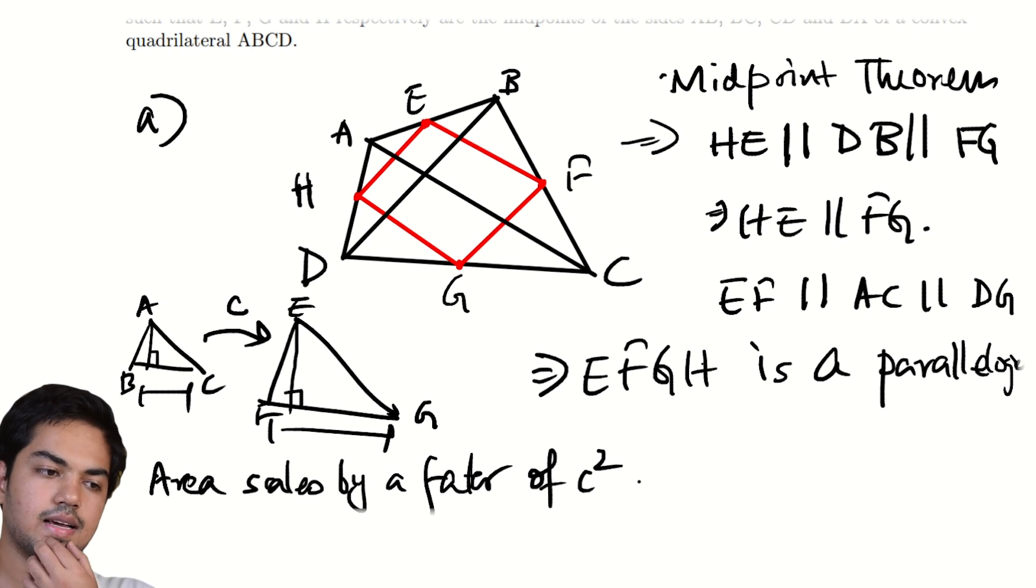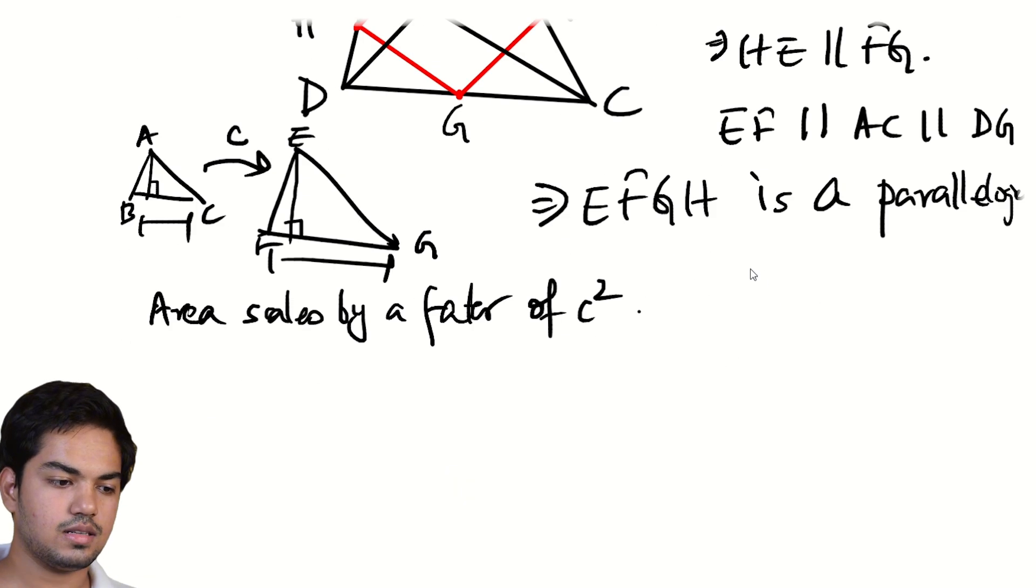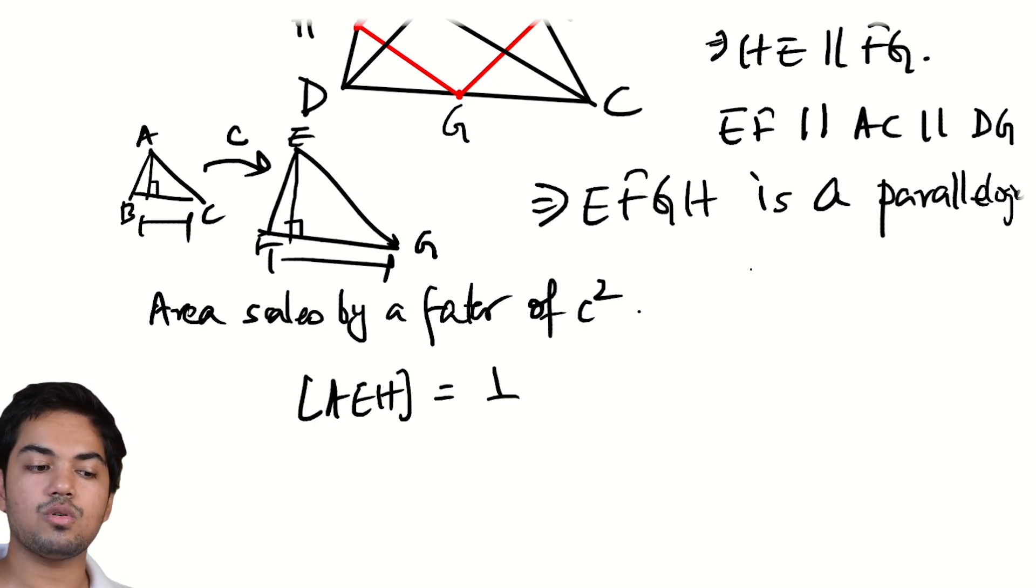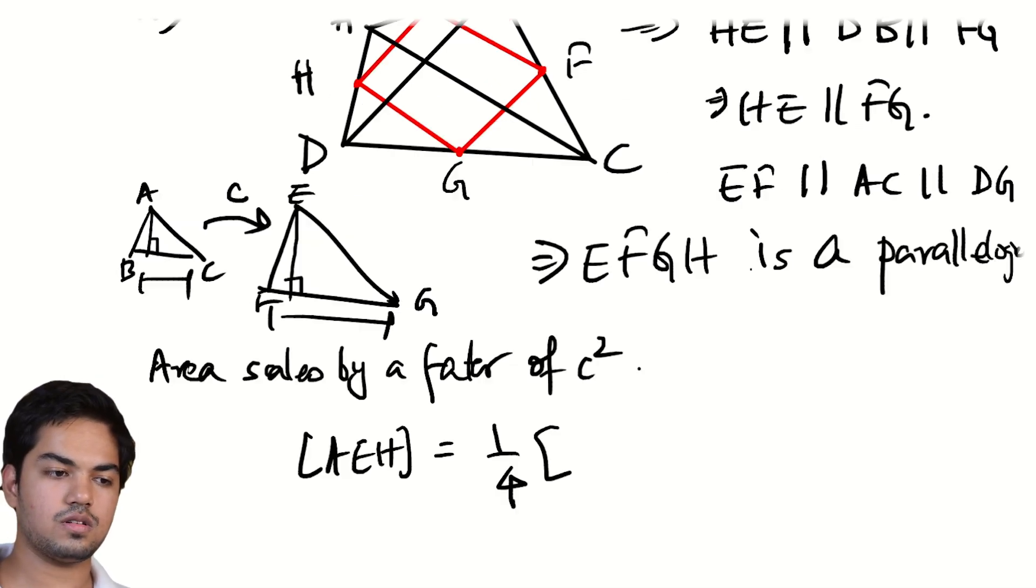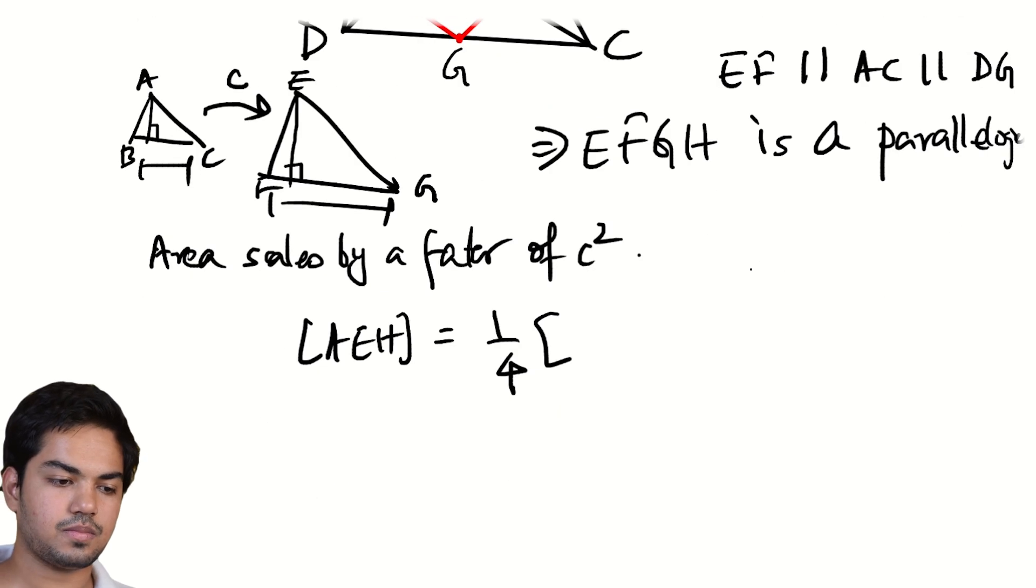In this case, I know that AEH and ADB are similar. And what is the scaling factor? It's two. ADB is twice as large as AEH. So if you just zoom in by a factor of two, that's what's going to happen. So in particular, I get that the area of AEH is one fourth the area of ADB, right?